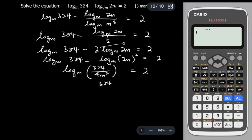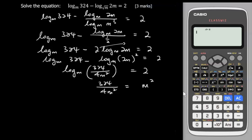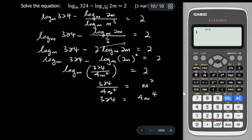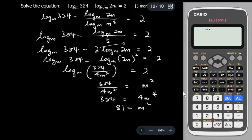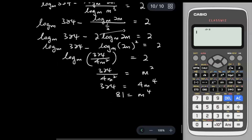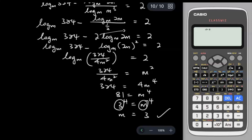Since this is in logarithm form, I change it to index form: 324 over 4m² equals m². Bringing 4m² to the right side gives 324 = 4m⁴. Dividing both sides by 4: 81 = m⁴. Since 3⁴ = 81, comparing bases gives m = 3. That is the answer.